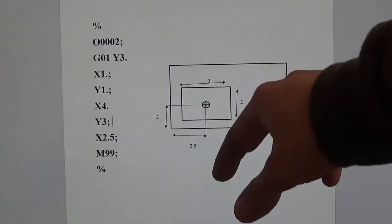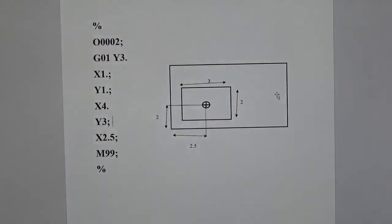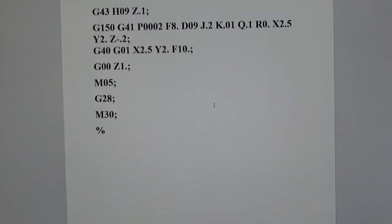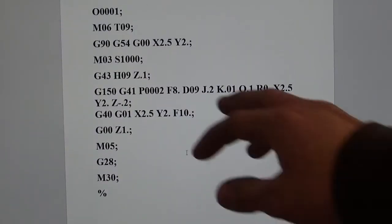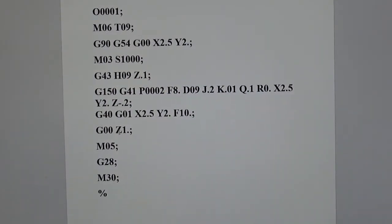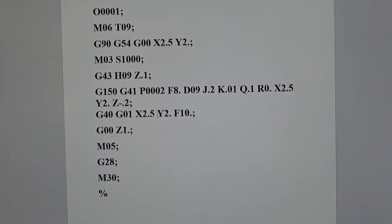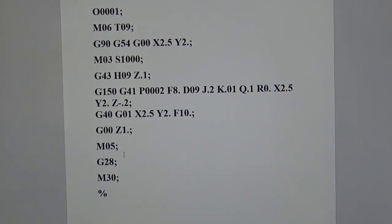Also, I am moving in absolute dimensioning here. You are allowed to do incremental dimensioning if you'd like. Now I'm back to the main program. I did the G150. Now I got my G40 in the next block of code here, which is canceling cutter comp. Then I got my G01, controlled straight line movement to this XY coordinates at a feed rate of 10 inches per minute. And I got my G00 rapid up to 1 inch. Then M05 turning off my spindle, G28 sending the machine home, and then M30 resetting the program.